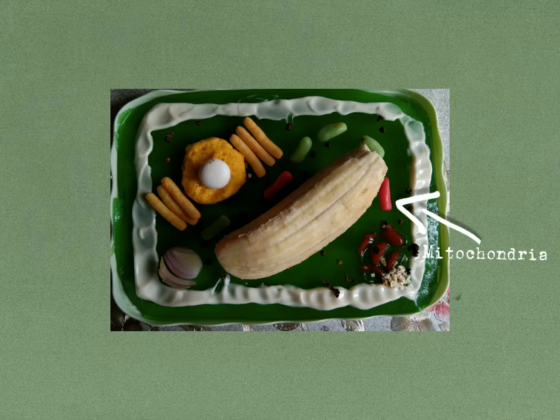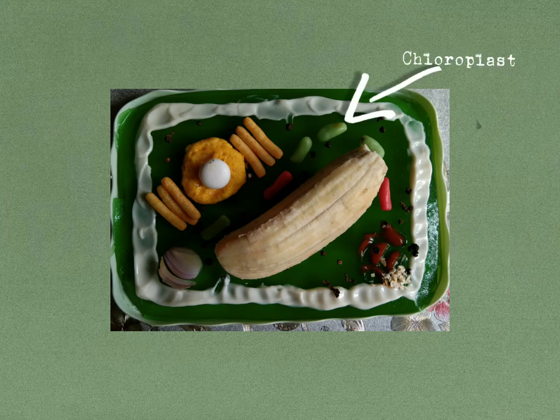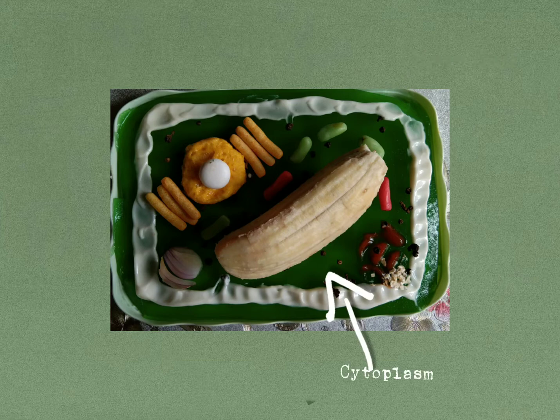Mitochondria are membrane-bound cell organelles that generate most of the chemical energy needed to power the cell's biochemical reactions. The two main functions of chloroplasts are to produce food during photosynthesis and store food energy. Cytoplasm is responsible for holding the components of the cell and protecting them from damage.